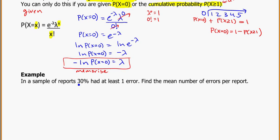So in a sample of reports, 30% had at least one error. So at least one, I'm seeing that. That's probability of x greater than or equal to 1. That's my at least one. And it has a probability of 30%. It says 30%, so that's 0.30, converting the percentage to decimal.